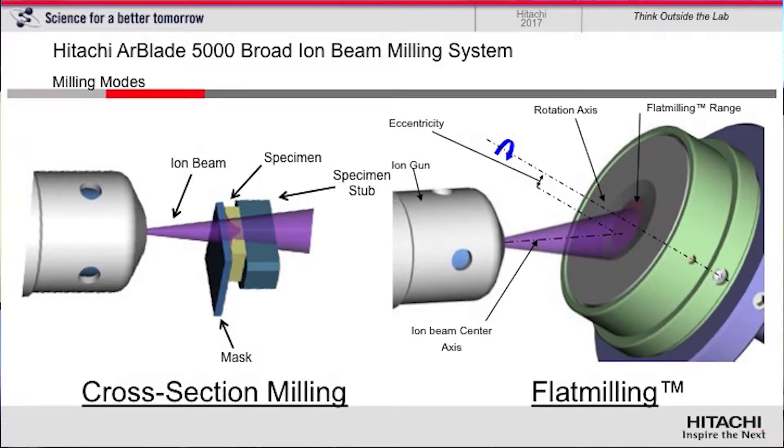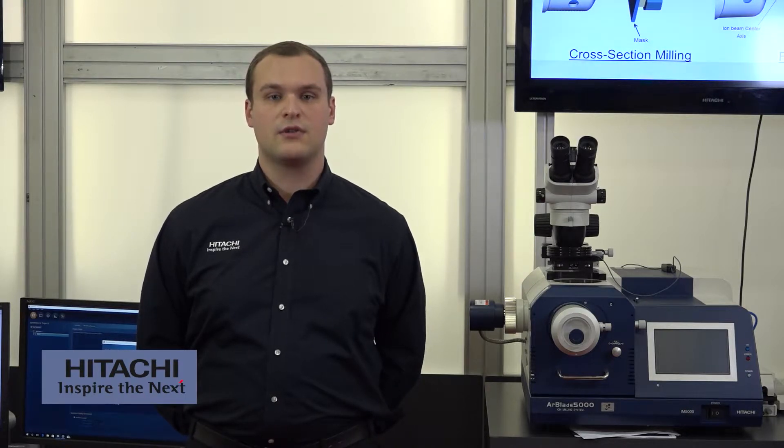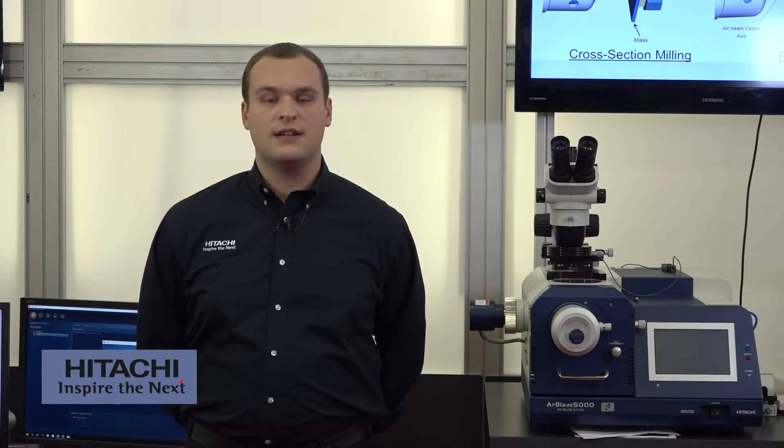The R-Blade 5000 features a dual function stage design for both cross-section milling and flat milling. Cross-section milling enables the generation of pristine surfaces throughout the thickness of a cross-section sample up to eight millimeters in width. This is ideal for observation and analysis of grains, inclusions, or the investigation of adhesion of interfaces in multi-layer structures.